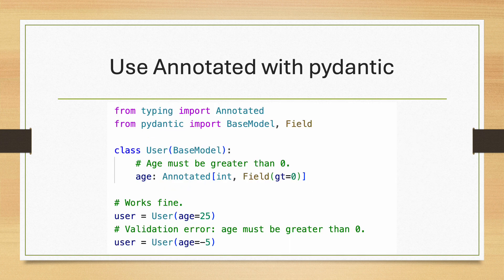Pydantic uses Annotated to enforce validations on data models. In this example, Field gt equals zero is metadata specifying that the value must be greater than zero. This metadata is used by Pydantic when validating field values.